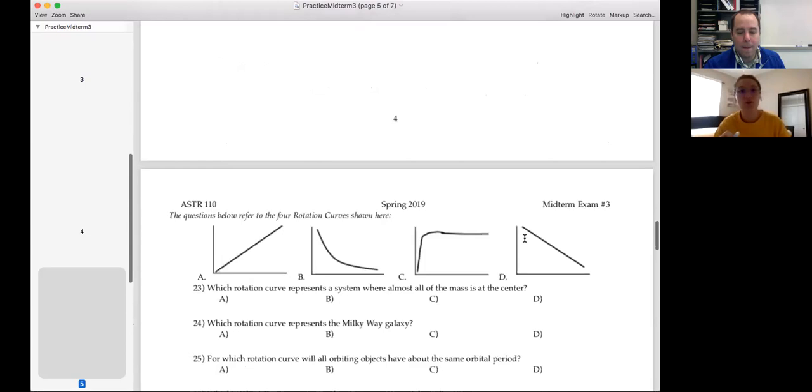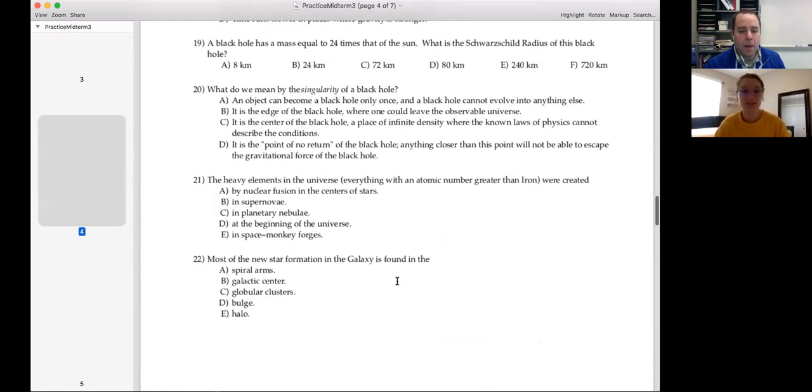And then, can we actually go to question 22? Yep. Most new spiral star formation in the galaxy is found in the spiral arms. The galactic center is all old stars pretty much, the globular clusters are all old stars, the bulge is all old stars, the halo is all old stars. The star formation, the young stars are all found in the disk, particularly the spiral arms. So when you kind of think of like, you can kind of think of spiral arms and disk together. That's where the spiral arms are, they're in the disk of the galaxy. All of the spiral arms are in the disk, but not all the disk is spiral arms. Okay, that makes sense.